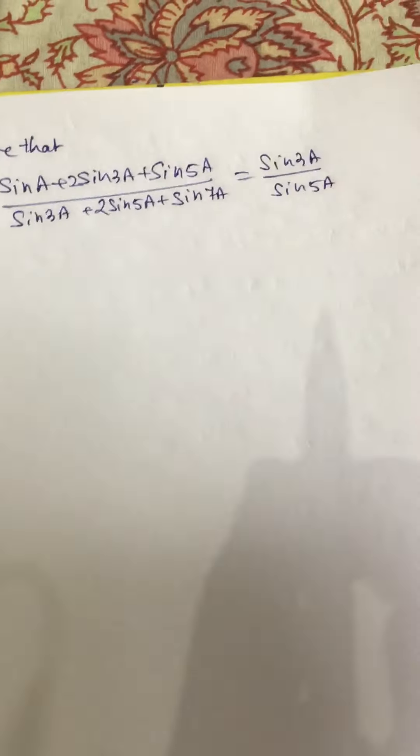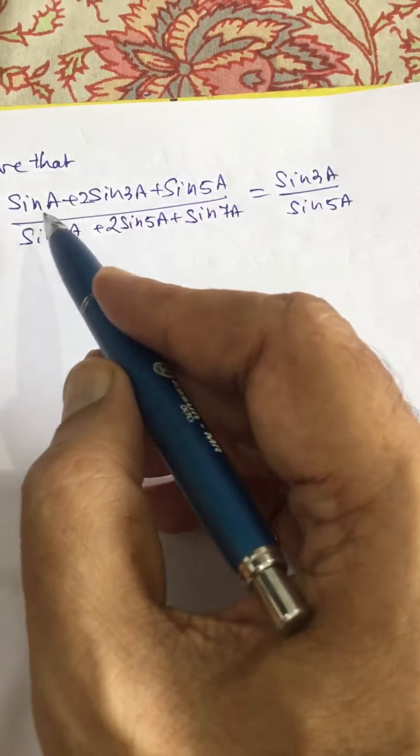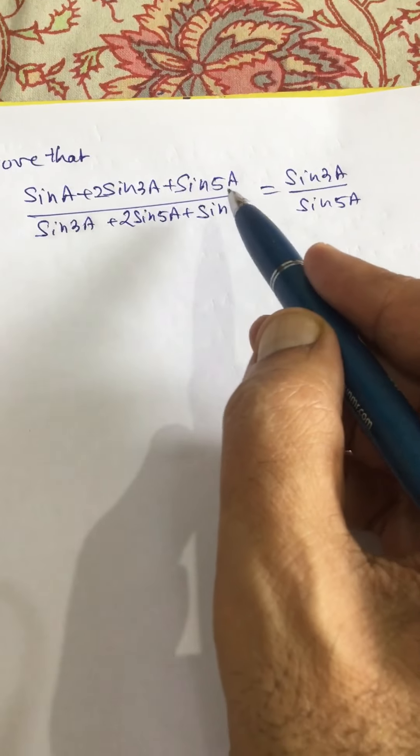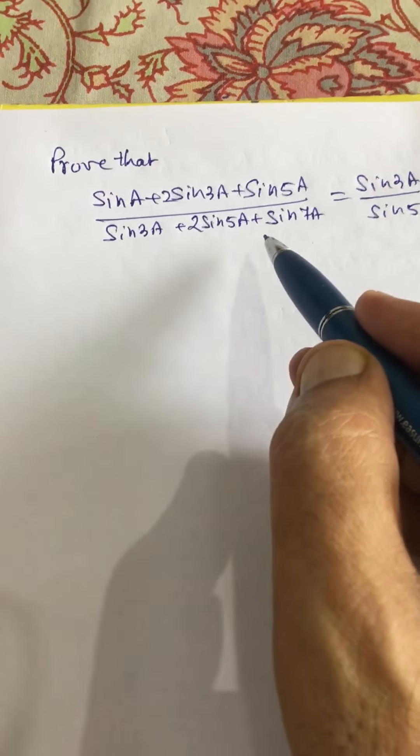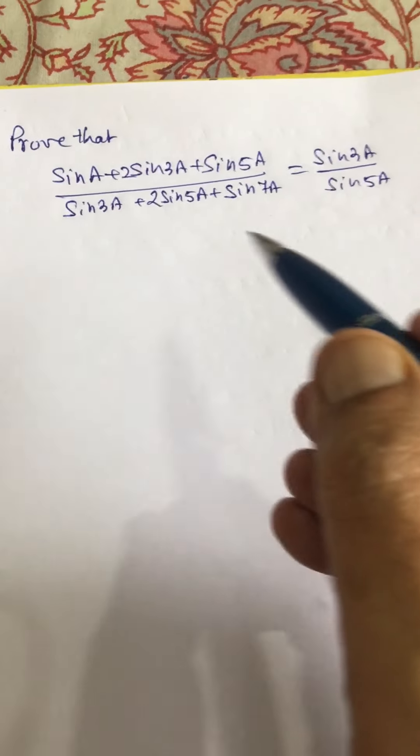Dear friends, welcome to my channel. In this video we will prove that sin A + 2sin 3A + sin 5A divided by sin 3A + 2sin 5A + sin 7A equals sin 3A divided by sin 5A.